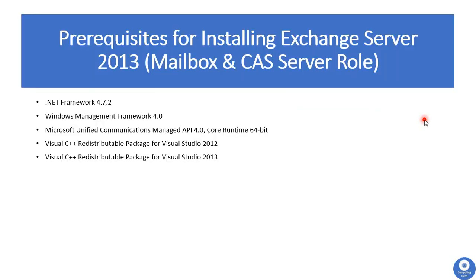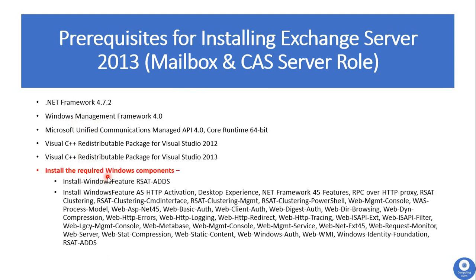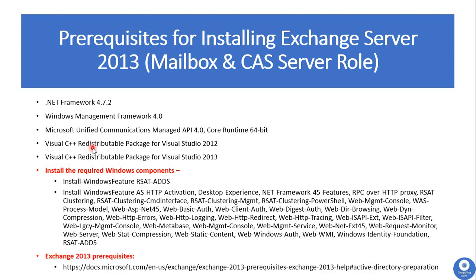The prerequisites for installing Exchange Server 2013 are required for installing the Mailbox and Client Access Server roles. We need to install certain software on the Windows server on which we are going to install Exchange 2013, along with required Windows components. We can run two commands in Windows PowerShell to install all required components. The first five software packages need to be downloaded from the Exchange Server 2013 prerequisites URL. After installing the Windows components and software, we need to restart the server.